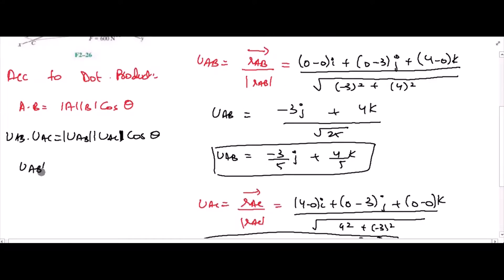Since these are unit vectors, the equation becomes cos theta is equal to UAB dot UAC.